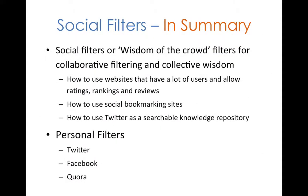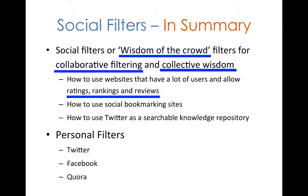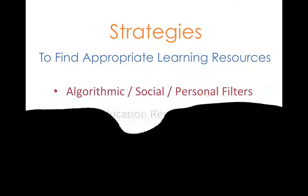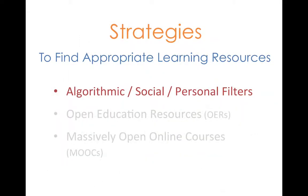In summary, social filters are wisdom of the crowd filters where we rely on collaborative filtering and collective wisdom. In this session, we looked at how to use sites like Amazon — which have a lot of users and allow ratings, rankings, and reviews — to find learning resources while curating. We also looked at social bookmarking sites like Reddit, Delicious, and StumbleUpon, and considered how to use Twitter as a searchable knowledge repository. Then we looked at personal filters: using Twitter and Facebook to ask for referral resources from your friends and network, and finally Quora, where you can ask a question to a community of enthusiasts and get a fellow human being giving you an answer.